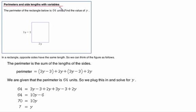Perimeters and side lengths with variables. In this topic, we're going to be working with perimeters. We know that the perimeter is always the sum of the distance around a shape.